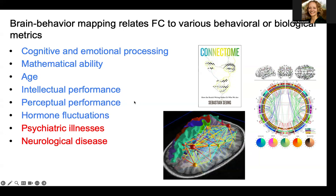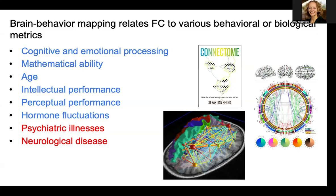Once we have these functional connectivity matrices, we can use them to predict or classify various groups or predict behavior. There have been thousands of papers looking at mapping functional connectivity measurements from individuals to things like cognitive and emotional processing, mathematical ability, age, intellectual performance, perceptual performance, and even hormone fluctuations. We're also interested in how psychiatric illnesses may result in differences between controls and a diagnostic group, and how neurological disease changes functional connections. Understanding those mappings between functional connectivity and behavioral or disease markers can tell us about the neural substrates that underlie various things that may be important for developing treatments or strategies for therapy.